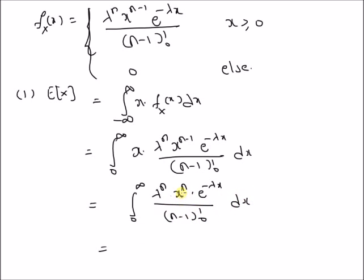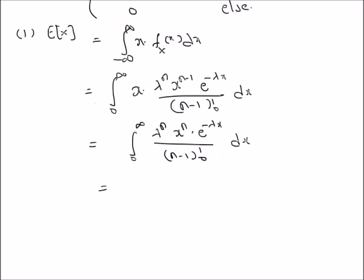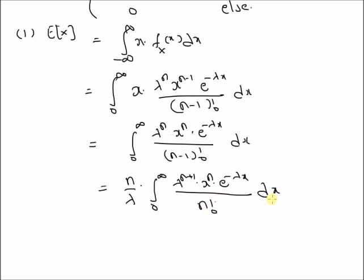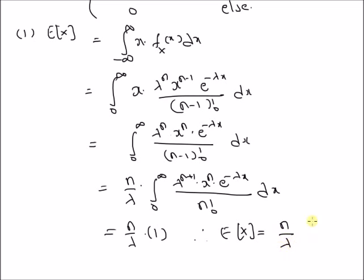This function can be adjusted to resemble the pdf of an Erlang random variable. By multiplying and dividing by n/λ, we get n/λ times the integral from 0 to infinity of λⁿ⁺¹ · xⁿ · e^(−λx) / n! dx. This integrand is an Erlang pdf with parameters λ and n+1, so the integral equals 1. Therefore the expectation of this Erlang random variable is n/λ.